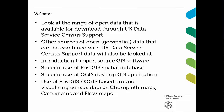We're going to look at the range of open data available for download from the UK Data Service Census Support. I'm also going to look at other sources of open geospatial data that can be combined with UK Data Service Census Support data, from organisations like the Ordnance Survey or the Office of National Statistics. Then we'll provide a brief introduction to open source GIS software before doing specific demonstrations, including creating choropleth maps, cartograms, and flow maps using QGIS.